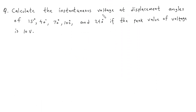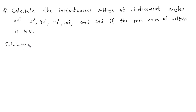Now, calculate the instantaneous voltage at displacement angles of 15 degrees, 40 degrees, 70 degrees, 100 degrees, and 240 degrees, if the peak value of voltage is 10 volt. Solution.